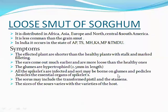Loose smut of sorghum is distributed in Africa, Asia, Europe, and North, Central and South America. It is less common than the grain smut, and in India it occurs in the states of Andhra Pradesh, Telangana, Maharashtra, Karnataka, Madhya Pradesh and Tamil Nadu.